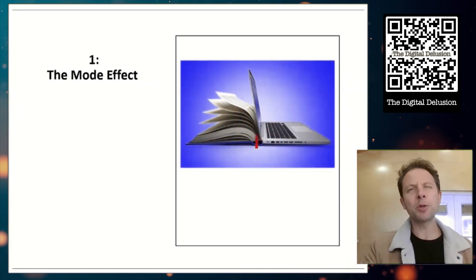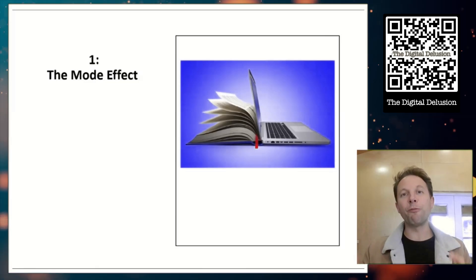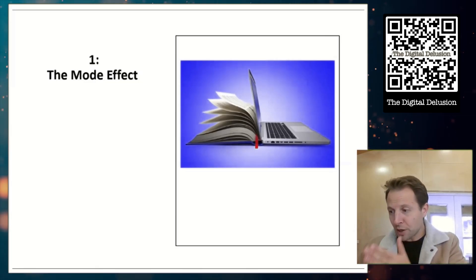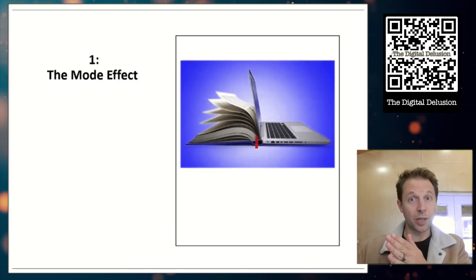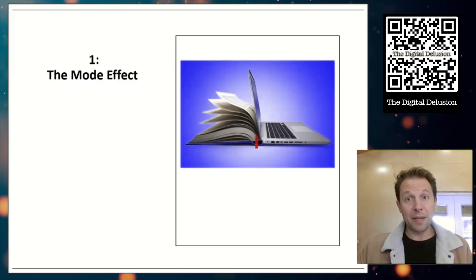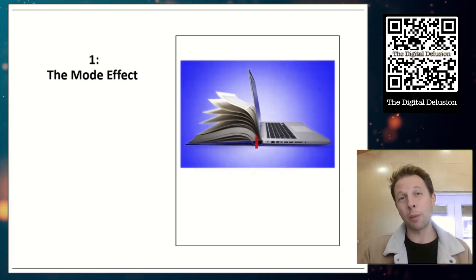Idea number one is here. It's a concept called the mode effect. Put simply, this says human beings perform differently when we do things on paper versus a screen. And nine times out of ten, we perform worse on a screen. So when it comes to learning, the mode effect basically says anytime you move from paper to digital, you should see a drop in performance.